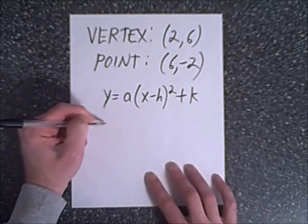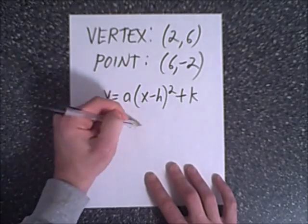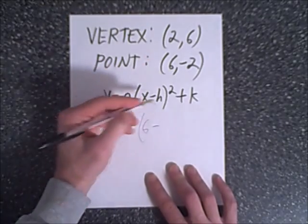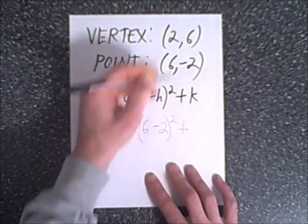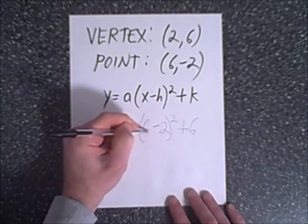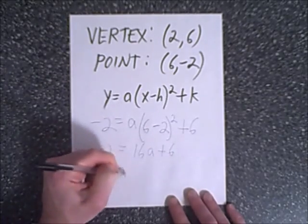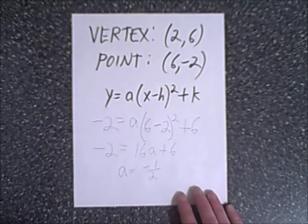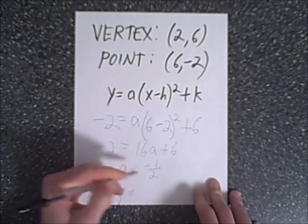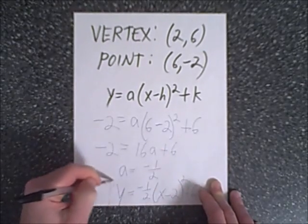We take the point: y is negative 2, and that equals a times (x minus h) squared plus k. We substitute x = 6, h = 2, and k = 6. So we get negative 2 equals a times (6 minus 2) squared plus 6, which is 16a + 6, giving negative 8 = 16a, so a = negative one-half. Our final equation is y = negative one-half times (x minus 2) squared plus 6.